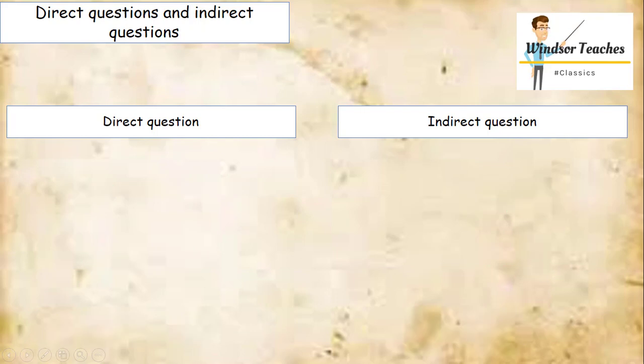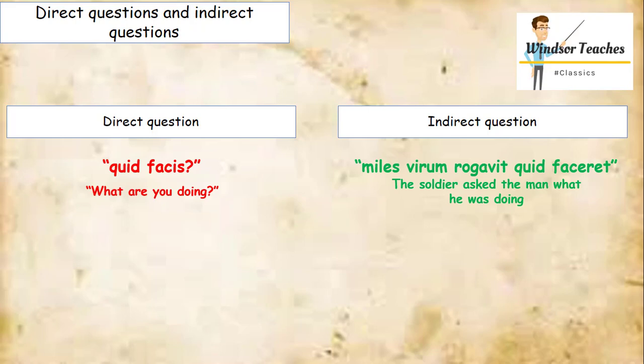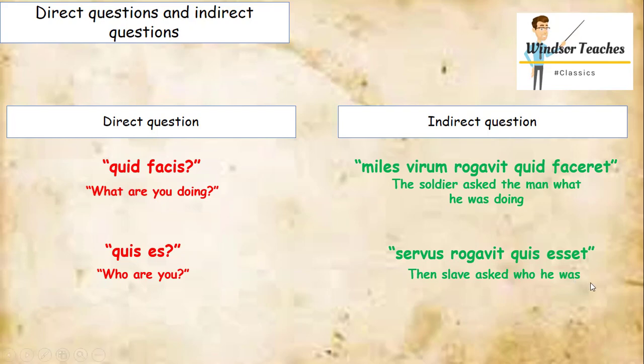So what might those same direct questions and indirect questions look like in Latin? What are you doing would be, quid facis? Which we might change to, miles virum rogavit quid faceret? The soldier asked the man what he was doing. The other direct question, who are you? We might ask, quis es? The indirect question that might go with that direct question might be, servus rogavit quis esset? The slave asked who he was.